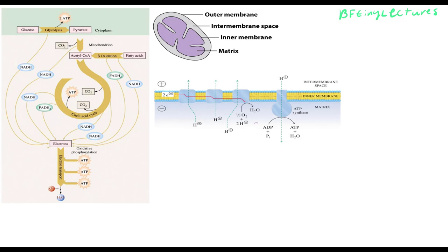Now those coenzymes will enter into the mitochondria, specifically into the matrix. They will be doing reactions in the inner membrane, creating hydrogens which are pushed into the intermembrane space. Those hydrogens in the intermembrane space will then flow back into the matrix and create ATP. The cofactors generated by the TCA cycle create hydrogens in the inner membrane space, those hydrogens flow back into the matrix and create ATP.